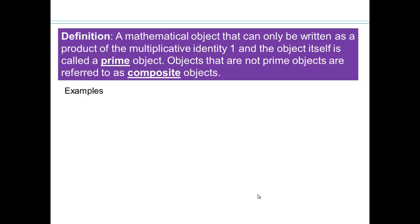All right, so we're going to make a definition. A mathematical object that can be written as a product of the multiplicative identity 1 and the object itself is called a prime object. Objects that are not prime objects are referred to as composite objects. So prime objects only have 1 and itself as its factors.